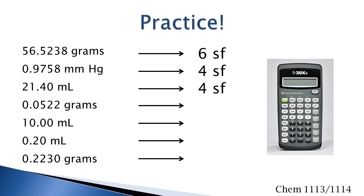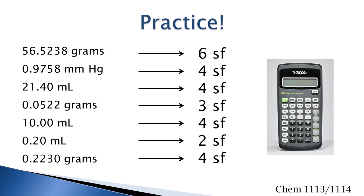In the fourth example, the two leading zeros are not significant, so this number has three significant figures. In the next example, there is a decimal point, so all the zeros are significant, and this number has four significant figures. In this number, there is a leading zero that is not significant and a trailing zero that is significant; this number has two significant figures. And in the last example, the trailing zero is significant, and this has four significant figures.